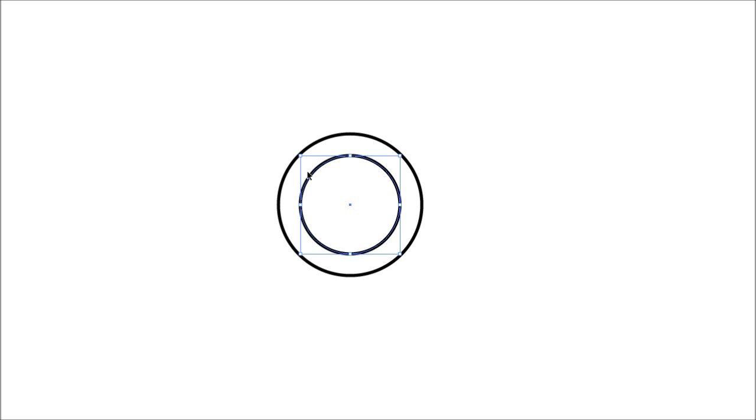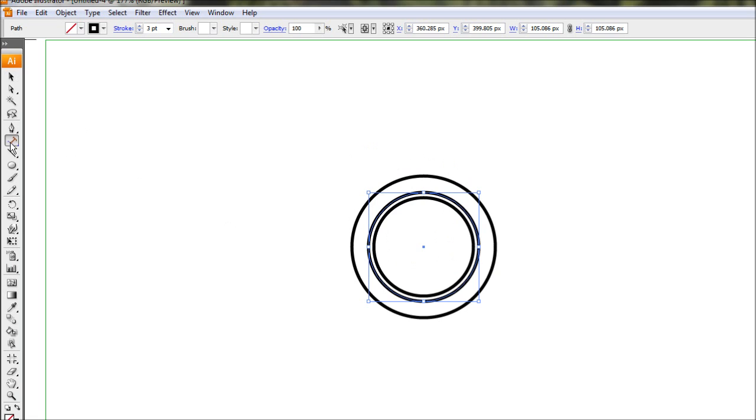Next step we're going to add some text and I want the text to curve around on the inside. To do that we need a path to guide our text around, so I'm going to use this inner circle, copy it with Ctrl+C, paste in front with Ctrl+F, and holding Alt and Shift drag it out just a little bit so the text isn't hard up against that line.